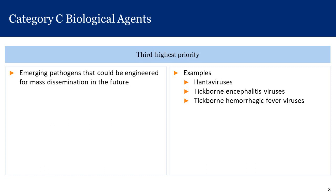Category C biological agents are the third highest priority per CDC. These are emerging pathogens that could be engineered for mass dissemination in the future. Hantaviruses are an example — there were hantavirus cases in the southwestern United States that were not intentional, but in theory a hantavirus could be engineered for an intentional attack. Tick-borne encephalitis viruses and tick-borne hemorrhagic fever viruses are also in this category.